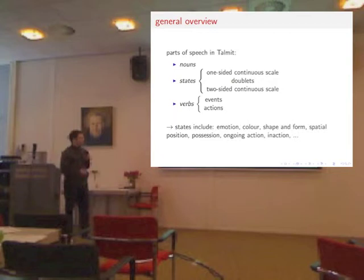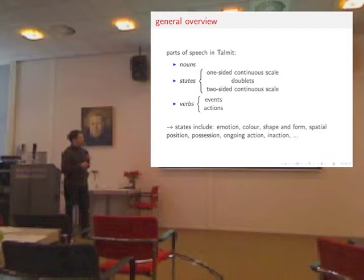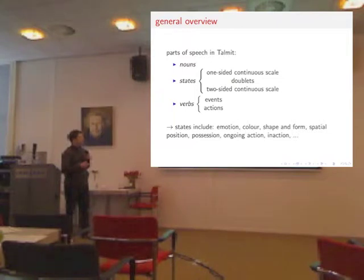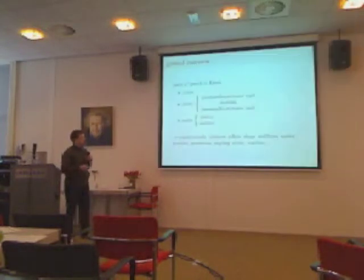For the morphology of states, the important idea is scales. States can have scales attached to them, and the scales can be one-sided, doublets, or two-sided. And that's what I'm going to talk about.